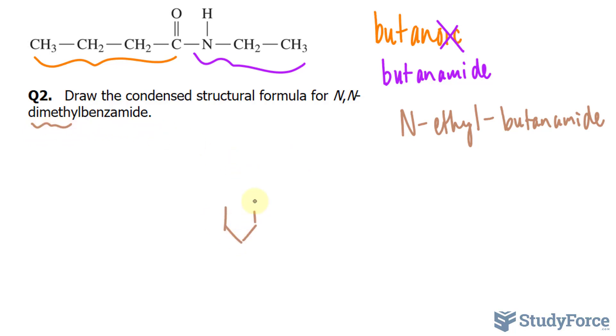Benzamide is a benzene ring that can be shown like this. It's bonded to a carbonyl, where you have this carbon double bonded to oxygen. And because we're dealing with amides here, we know that there will be a bond between this carbon and the nitrogen.